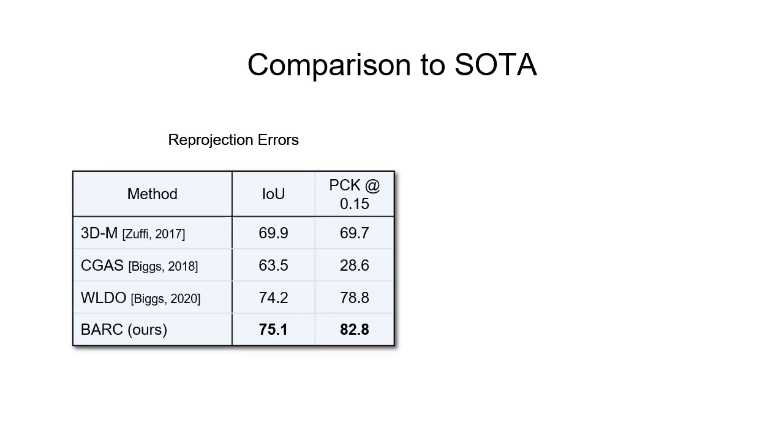For example, prior work uses intersection over union or IOU score for the silhouettes and the percentage of correct keypoints, or PCK score for keypoints. While Bark is more accurate than current state-of-the-art methods in terms of both measures, these don't fully capture the quality of the predicted 3D shape.